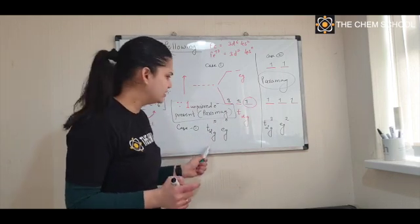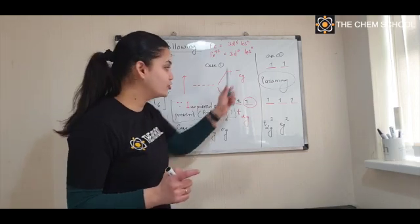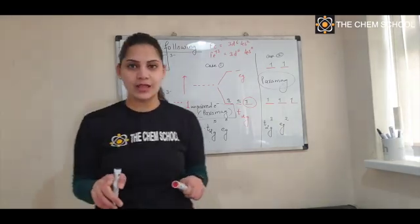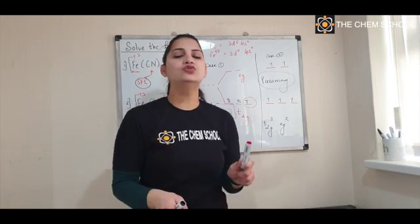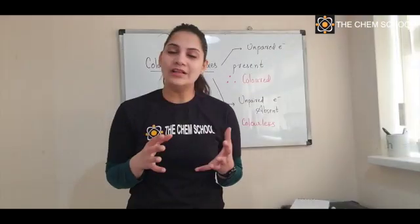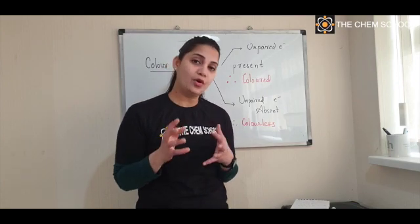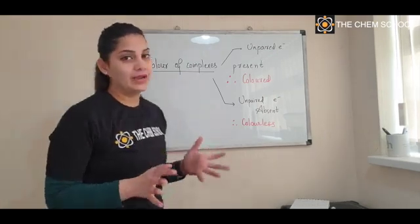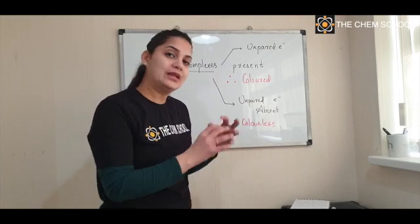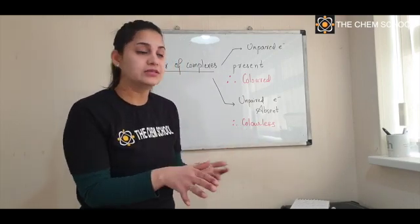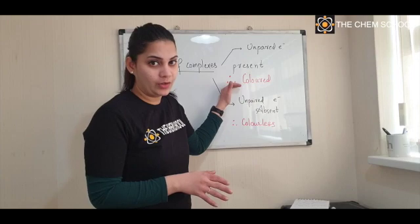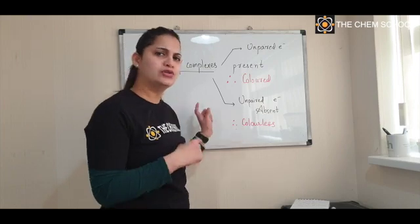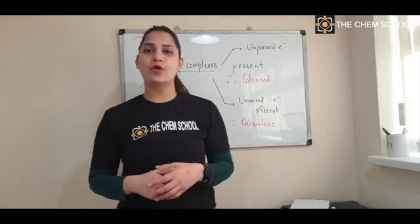The two complexes looked very similar, but because the ligands were different they produced completely different splitting of the octahedral complex. This is how we write electronic configuration for the splitting of an octahedral complex. Also remember: if you have unpaired electrons in the D orbital, the complex will be coloured. If unpaired electrons are absent, the complex is colourless. Remember this concept alongside magnetic properties.